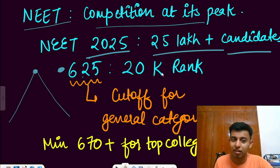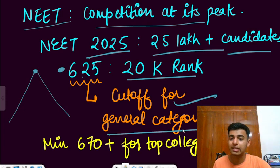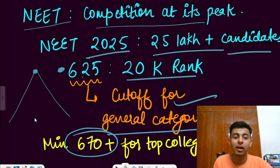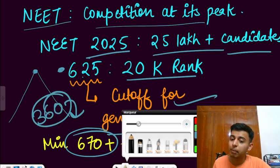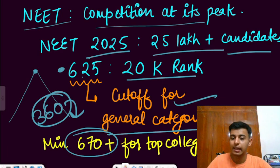I'm expecting 25 plus lakh candidates to appear for the examination. And with this amount of competition, what is the conclusion? At 625 marks, the rank might be around 20k from next year and this will be the cutoff for the general category. So if you want the best colleges, you need to score 670 plus and contribution of biology will be 360 in it.